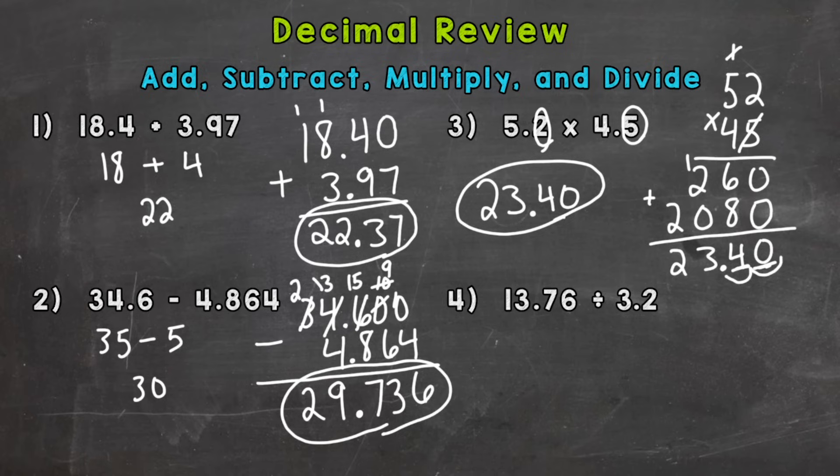So for number 4, we have dividing decimals. So let's set it up. 3.2 is our divisor. And 13.76 is our dividend. So when you get to division problems, the first thing we need to check is, is the divisor or outside number whole? If not, we need to make it a whole number. Here we have 3.2. So it's not exactly a whole. So we need to move this decimal to the right one time to make it a whole number. This is going to make our problem much easier.